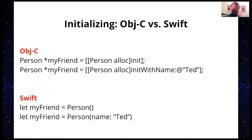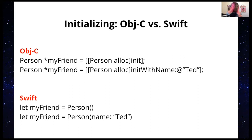Then here comes Swift, and you immediately start to see differences in simplicity. Something as simple as initializing something — in Objective-C you have extra brackets, you have to intentionally allocate your memory. In Swift, it kind of does all of this for you, and it's very, very simplified.